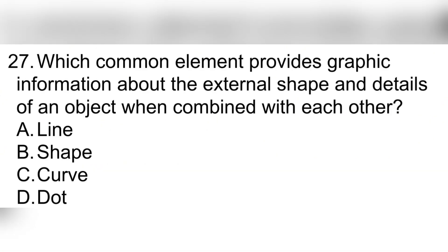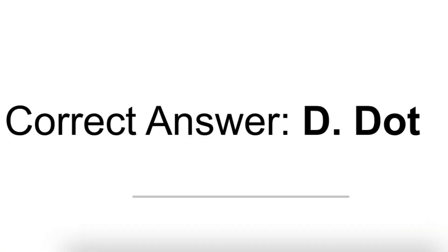Question 27. Which common element provides graphic information about the external shape and details of an object when combined with each other? A. Line. B. Shape. C. Curve. D. Dot. Correct answer: D. Dot.